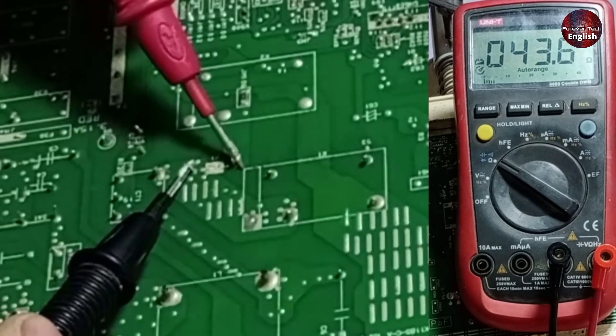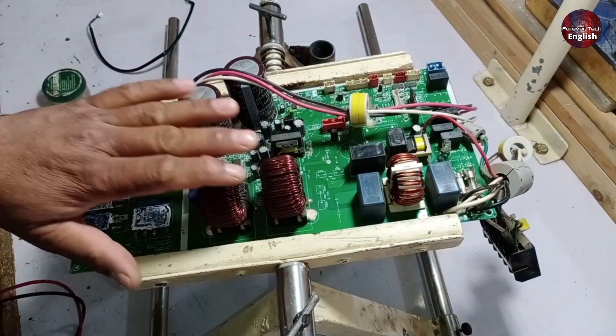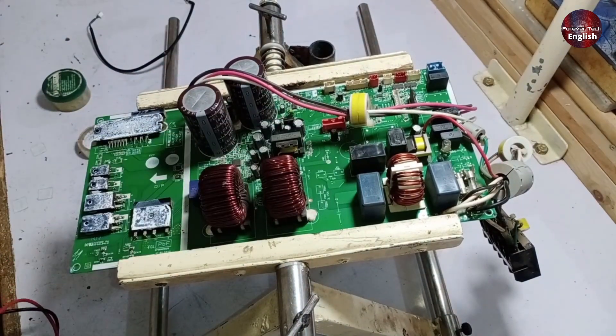After checking this, we need to check the line filter and the reactors installed here. Once you've tested these components, you need to check the rectification.